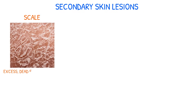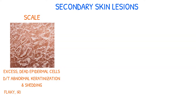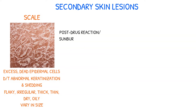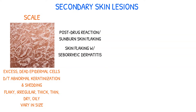Scale refers to the excess dead epidermal cells that are produced by abnormal keratinization and shedding. The scales can be flaky, irregular, thick or thin, dry or oily, and vary in size. Examples include post-drug reaction, sunburned skin flaking, or flaking of the skin with seborrheic dermatitis following scarlet fever.